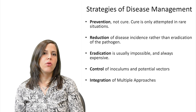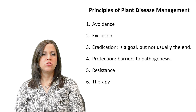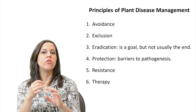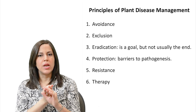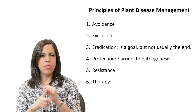The principles for plant disease management — there are basically six of them: avoidance, exclusion, eradication, protection, resistance, and therapy. We're going to discuss each one of them separately.